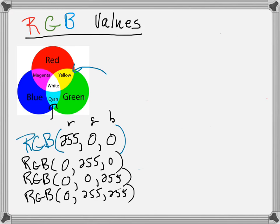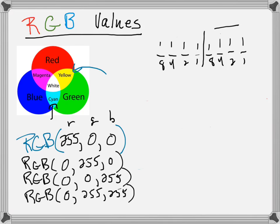Let's convert 255 to hexadecimal. If you have binary with eight bits — all ones — you divide it into two four-bit segments: one, one, one, one and one, one, one, one. Each segment gives you 8+4+2+1 = 15, and 15 in hexadecimal is F. So the first digit is F and the second is also F. So 255 decimal is FF in hexadecimal.